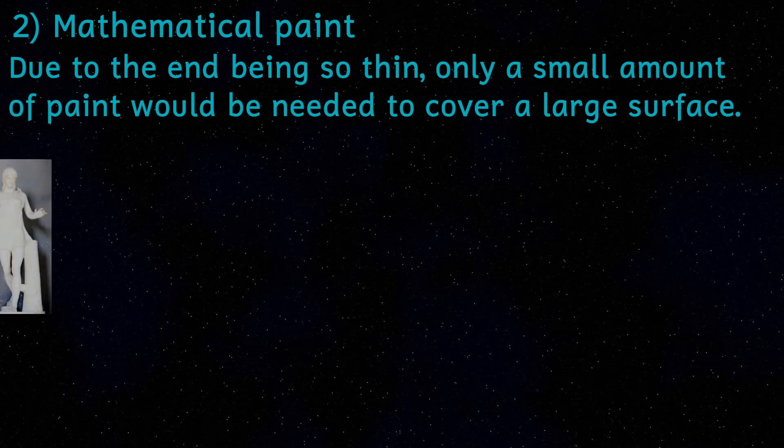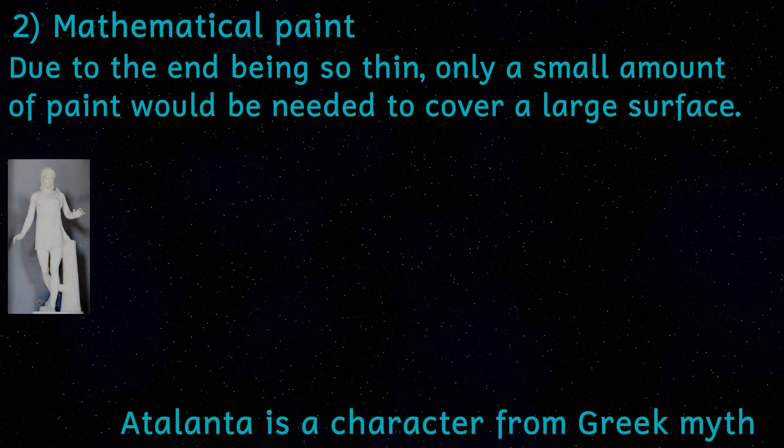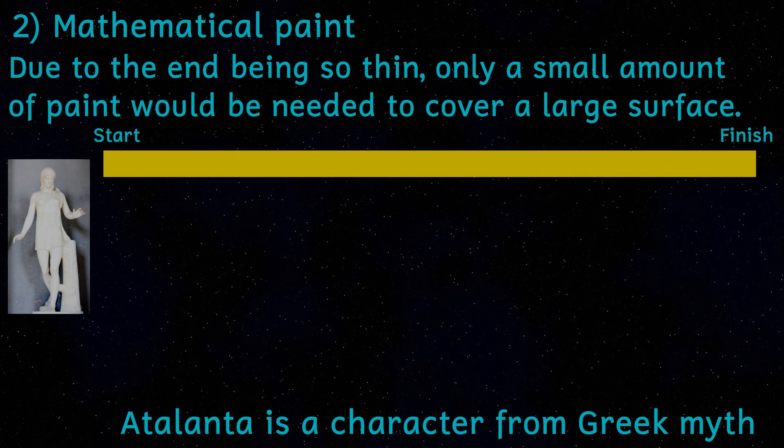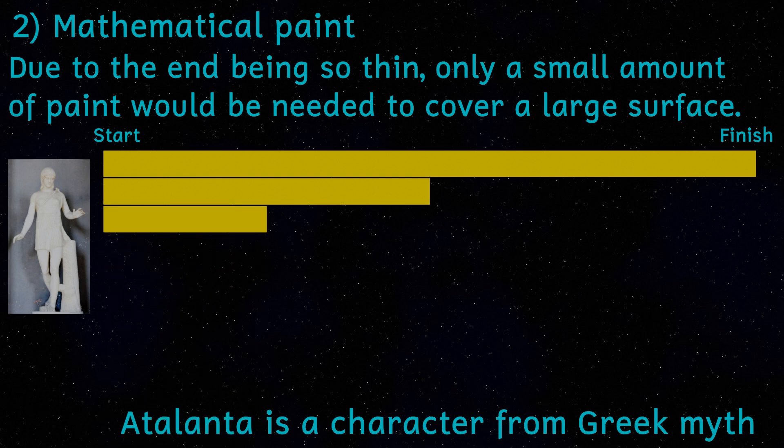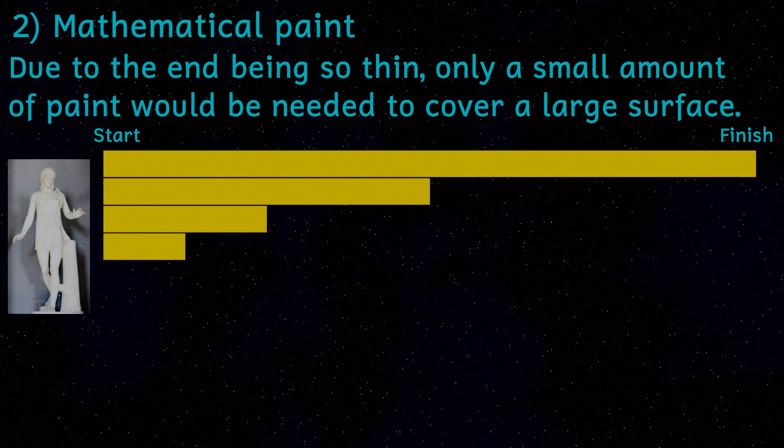In this paradox, he suggested that Atalanta wanted to walk to the end of a path. In order to do that, she must walk halfway there. In order to do that, she must walk a quarter of the way there. And in order to do that, she must walk an eighth of the way there. And so on. This means that Atalanta must perform an infinite number of tasks, which of course she can never do.